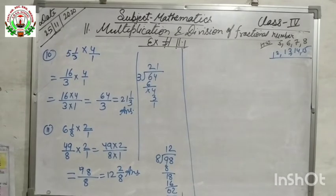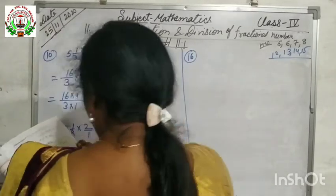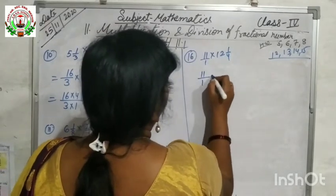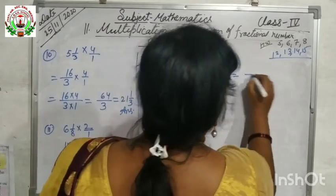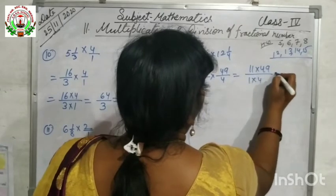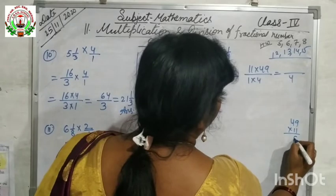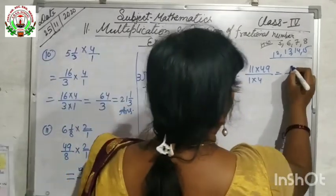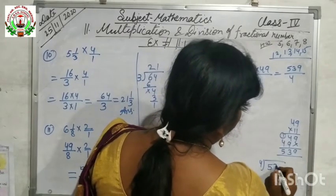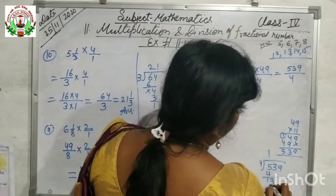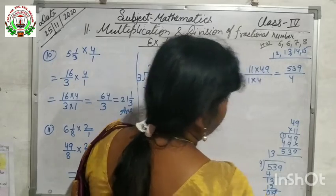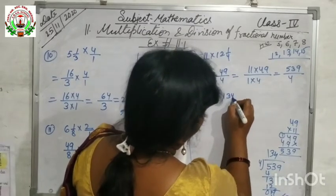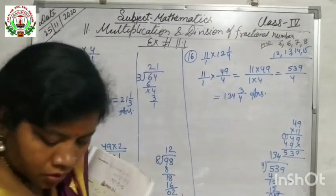Question number 16 is 11 into 12 and 1/4. Write 11 as 11/1. Break the mixed fraction: 12 fours are 48, 48 plus 1 is 49, so 49/4. Multiply: 11 into 49 is 539, 1 into 4 is 4, giving 539/4. Converting to mixed fraction: 4 goes 134 times giving 536, remainder 3. The answer is 134 and 3/4.